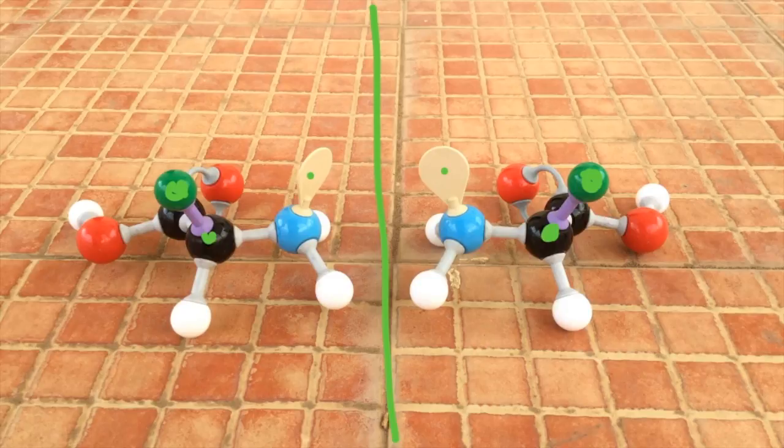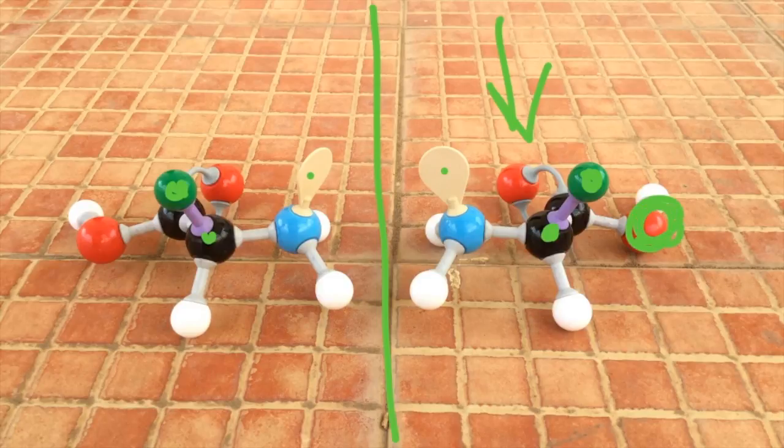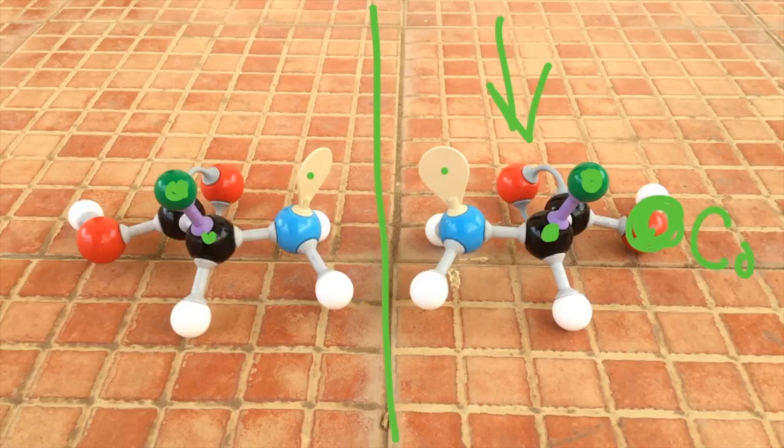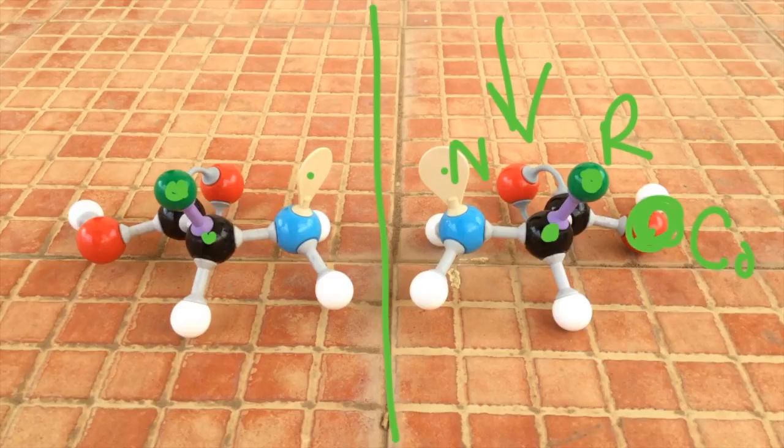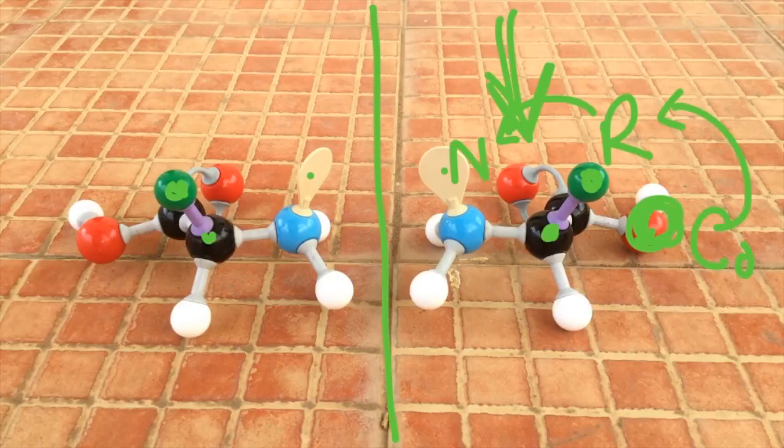So imagining that our perspective is viewing from this direction, we see that the carboxyl group is on this side CO, followed by the R group R, followed by the nitrogen group, which means that looking from this direction we would be going in a clockwise rotation spelling out the word CORN.